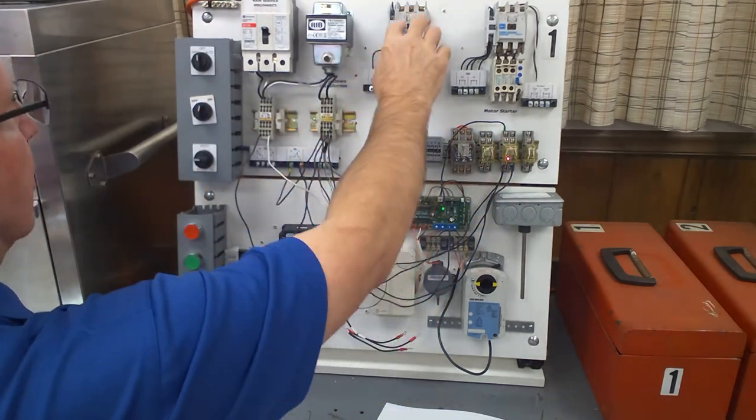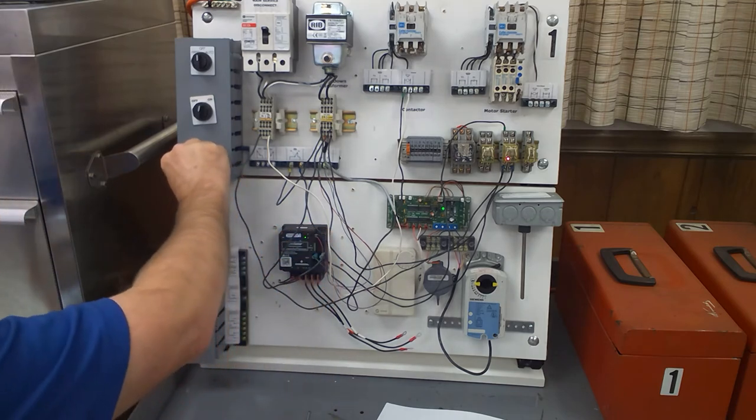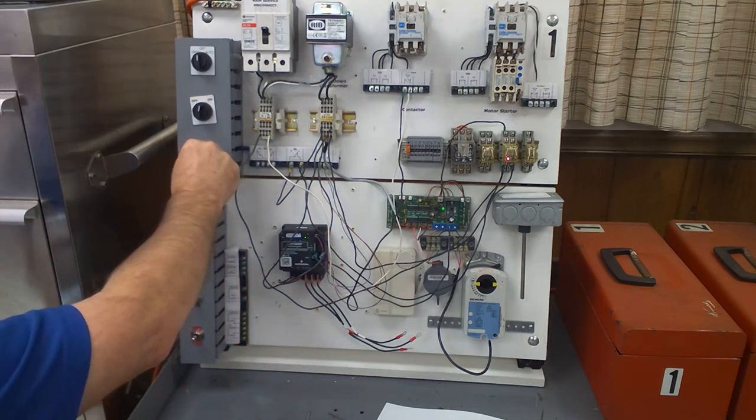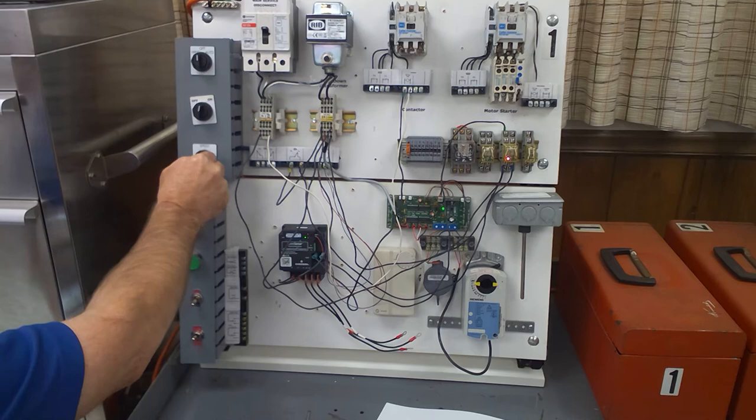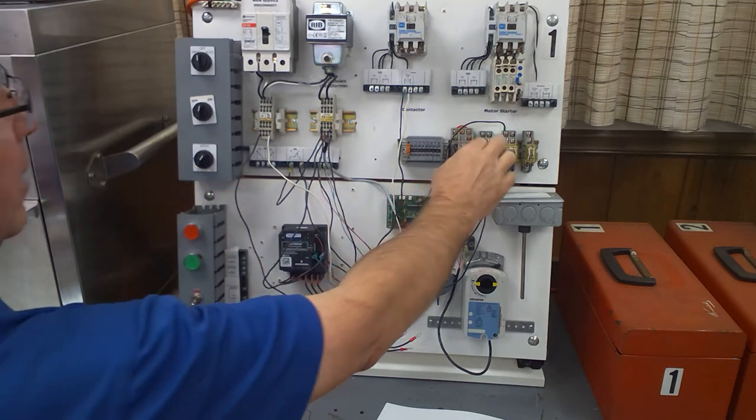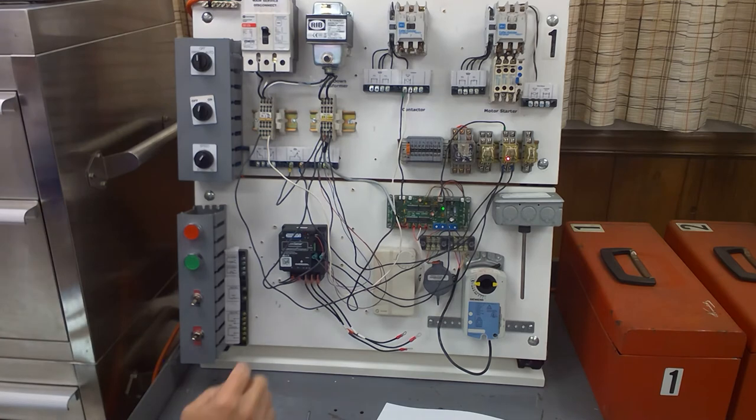So I got a call for cooling, relay pulls in. The core sense says okay, go ahead and start the compressor. Now here is my motor temperature sensor simulator. Once I turn it a little bit above halfway because this is a 10,000 ohm potentiometer, you'll see that I didn't lose the call for cooling, but the contactor did drop out, so it shut off.